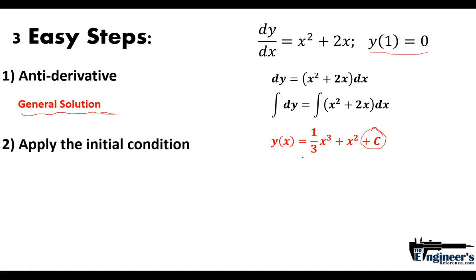The next step: apply your initial condition. We have an initial condition - when x is 1, y is 0. So we're going to substitute for x and for y, set this whole equation equal to 0.